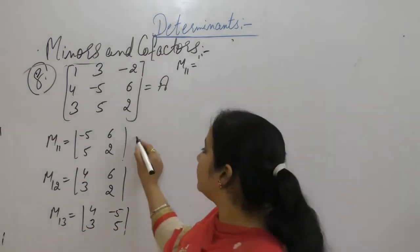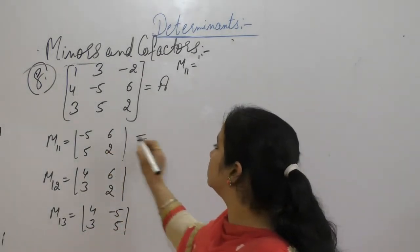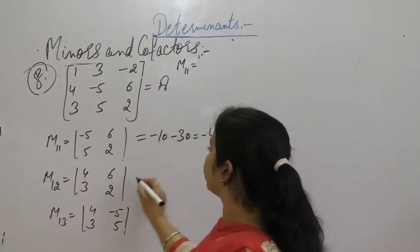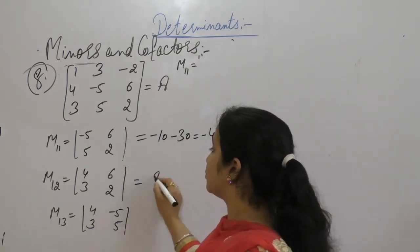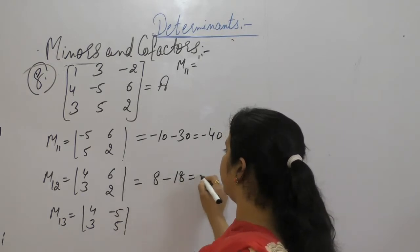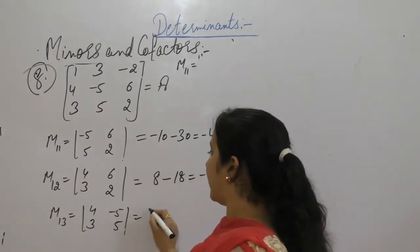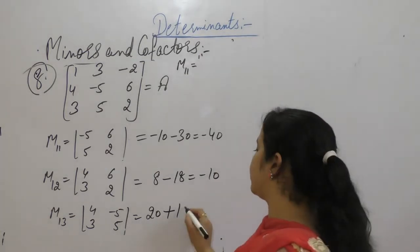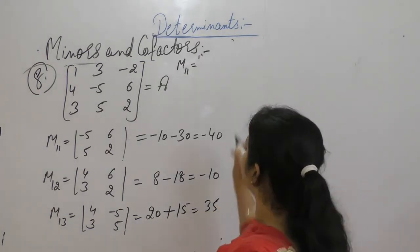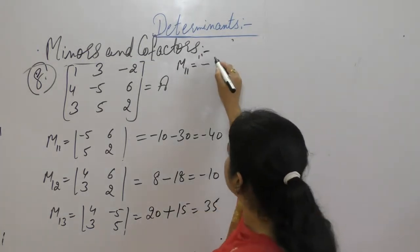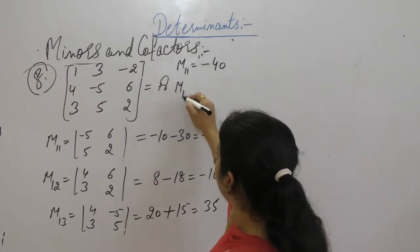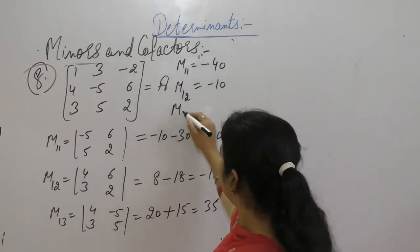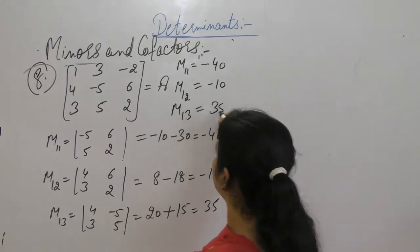Now solve the values. 5 into 2 minus 6 into 5 gives M11. 4 into 2 minus 6 into 3 gives M12. 5 into 4 minus minus 5 into 3 gives M13. So M11 is minus 40, M12 is minus 10, M13 is 35.